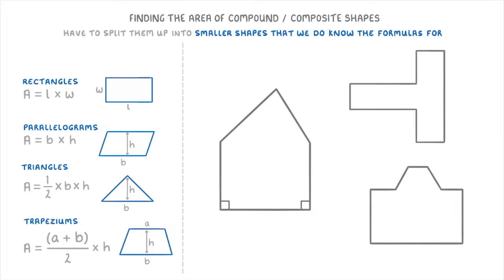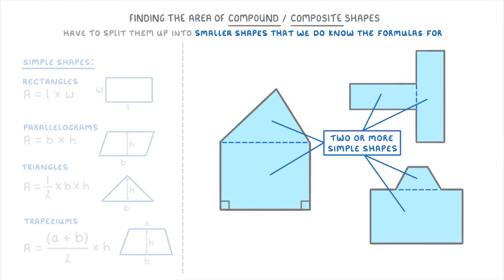And one thing to point out is that we sometimes call these four easy shapes simple shapes because we have formulas for them. Whereas the more complicated shapes that we're focusing on in this video are often called compound or composite shapes because they're made up of two or more simple shapes.